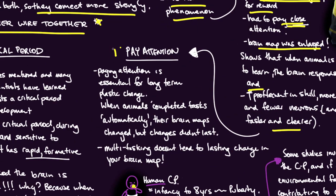One of the key points from this is that you have to pay attention. Paying attention is essential for long-term plastic change. When animals completed tasks automatically, their brain maps changed but the changes didn't last. We would suggest that multitasking doesn't lead to lasting change in your brain map.